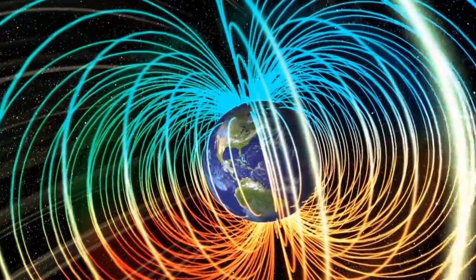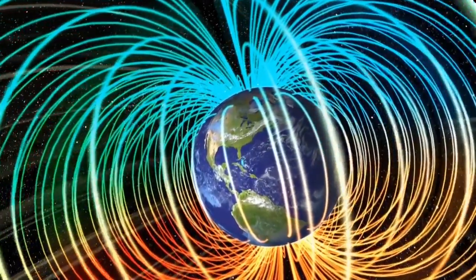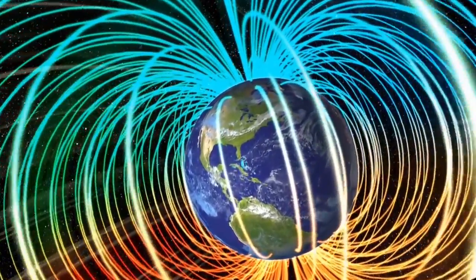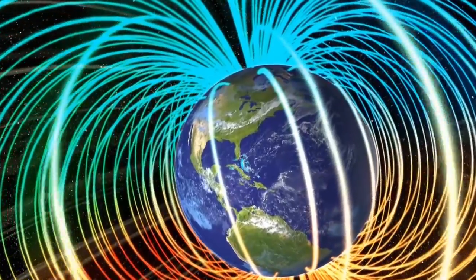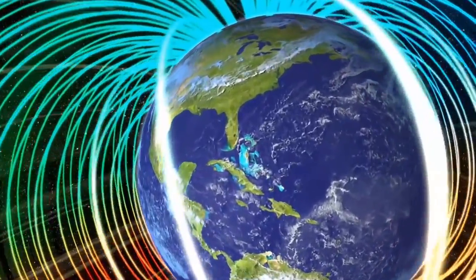Creating this global magnetic shield required special conditions. Earth had to be large enough to have a molten core and had to rotate fast enough to produce an electrical current that generates the planet's magnetosphere.